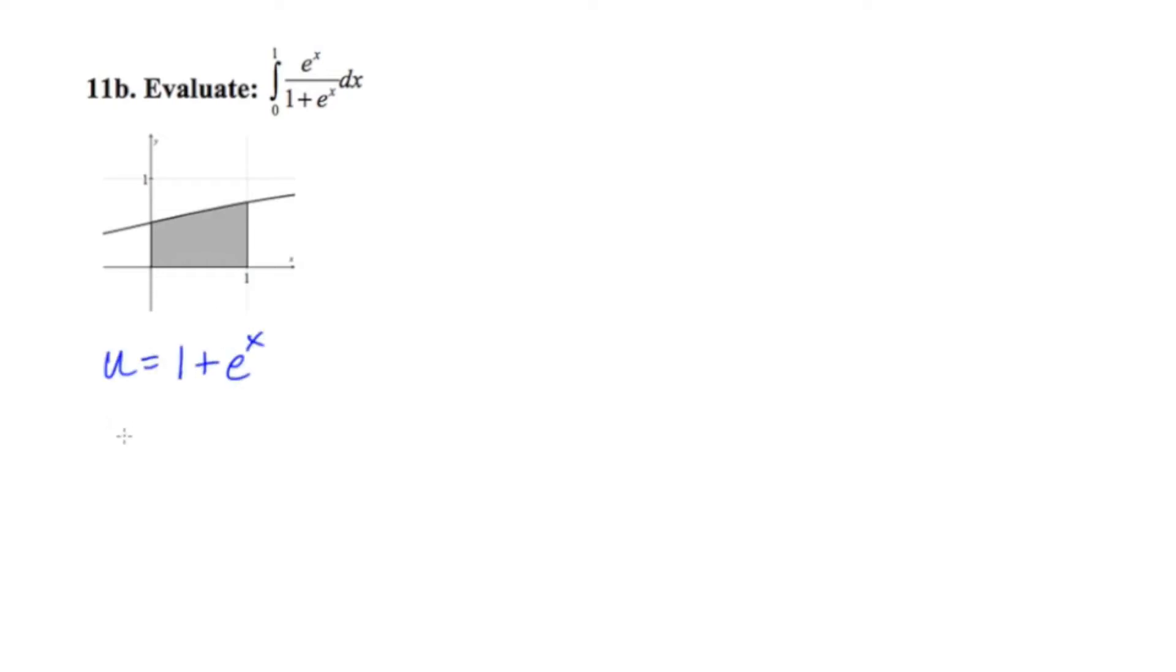Now if I differentiate both sides with respect to x, the left becomes du. The derivative of 1 is 0, so I'm not going to write anything. And the derivative of e to the x is e to the x, and I'll follow this with a dx.